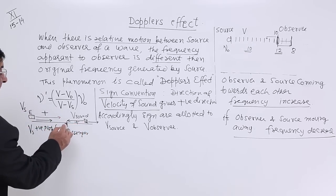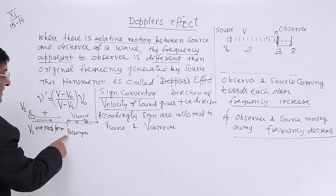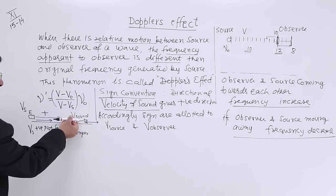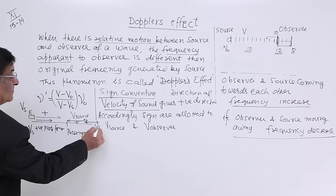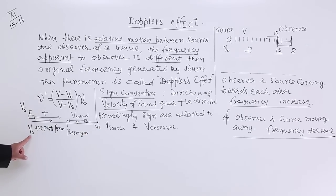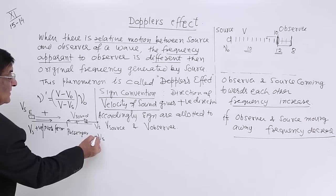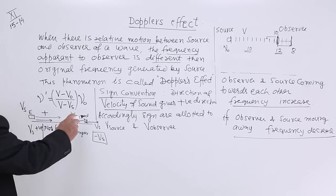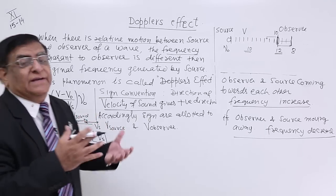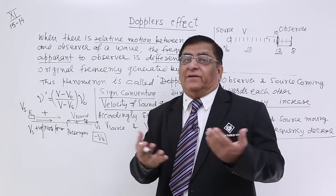After the engine crosses the passenger and moves ahead, the observer is now behind the engine. The direction of sound is now reversed — from source back to observer. So for this new configuration, the positive direction is opposite to before. The engine is now moving away from the observer, which is opposite to the new positive direction — so the velocity of the engine is now negative. This is what makes the difference in sign, and this is known as the sign convention.